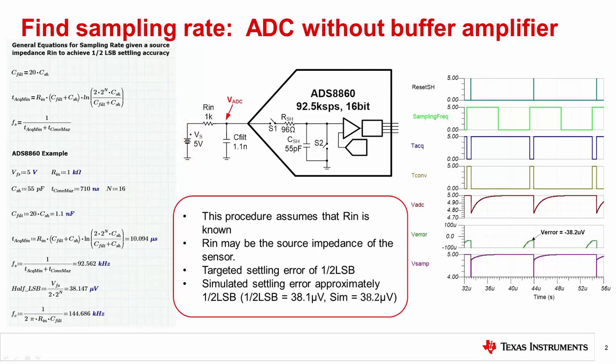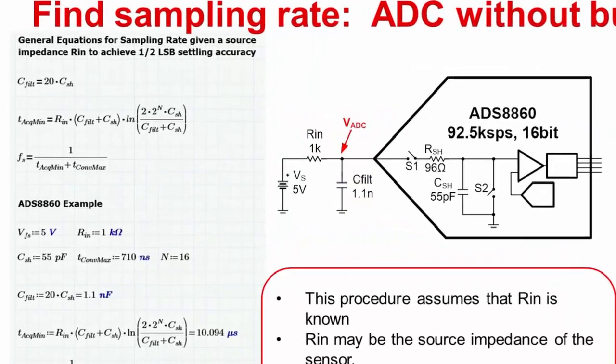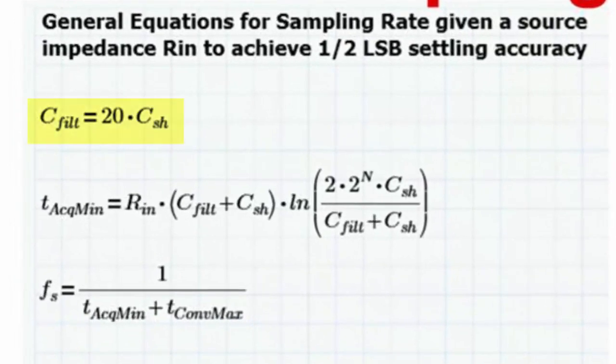This impedance will need to be included in the input resistance Rn. The input capacitance C-Filt is selected the same way we did in previous videos. That is, it's selected by multiplying the internal sample and hold capacitance by 20.